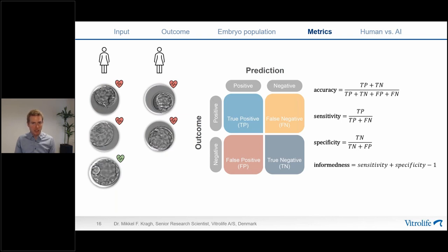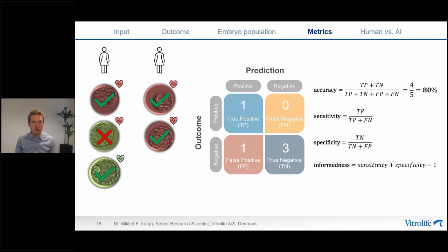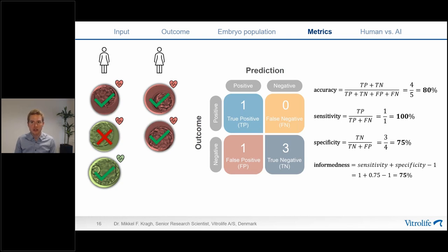In a less extreme case, the AI predicts negative for three embryos and positive for two. This also results in four correct predictions and one incorrect — 80% accuracy — but now sensitivity is 100%, specificity is 75%, and informedness is 75%, meaning the model has genuinely informed us beyond random guessing. This illustrates that even with equal accuracy of 80%, two models can be very different. Accuracy is probably not the best performance metric and is not closely related to clinical practice.